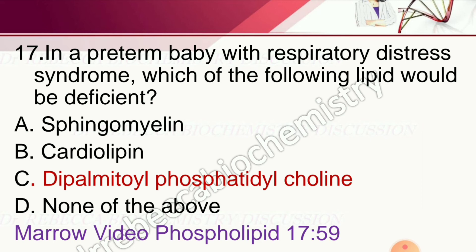Question 17: In a preterm baby with respiratory distress syndrome, which lipid would be deficient? Options are dipalmitoyl phosphatidylcholine, sphingomyelin, acidolepine, and none of the above. The correct answer is dipalmitoyl phosphatidylcholine.